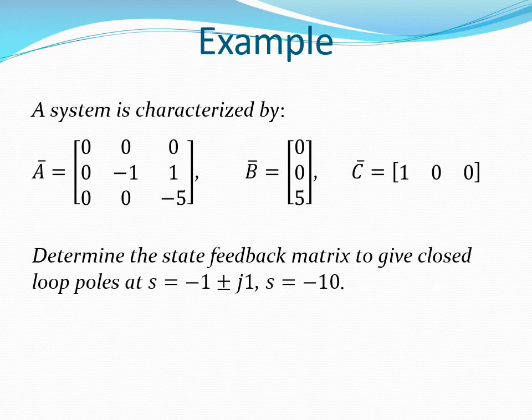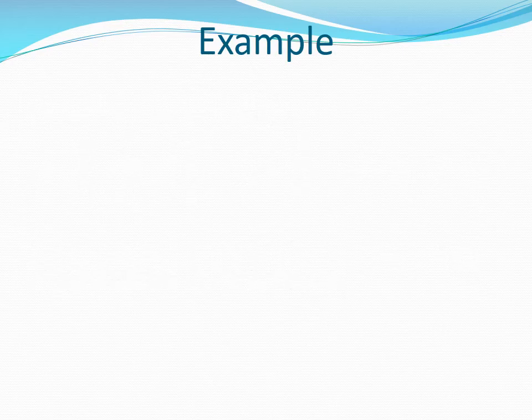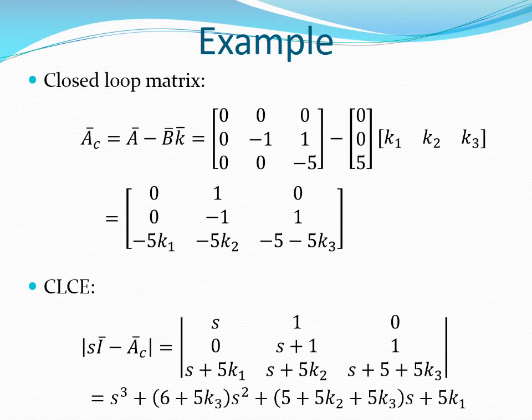Let's illustrate using an example. In this example, we are given the matrices A, B, and C. We are required to determine the state feedback matrix so as to get closed loop poles at minus 1 plus J, minus 1 minus J, and minus 3. The matrix B is a 3 by 1 matrix and we have three states. Therefore, to square up the matrix BK, matrix K must be a 1 by 3 matrix.